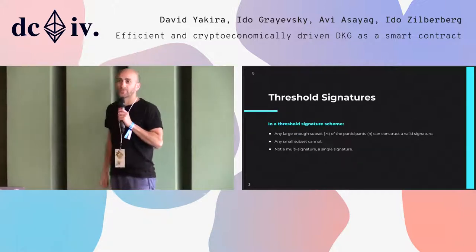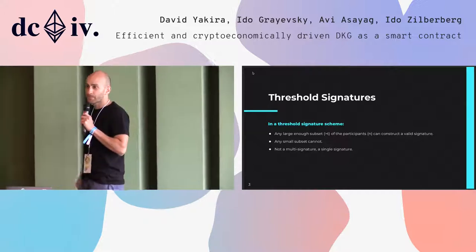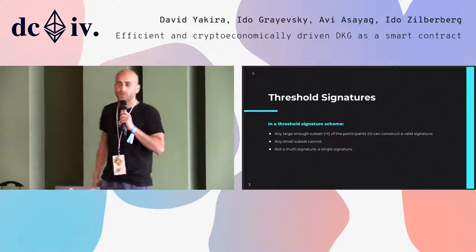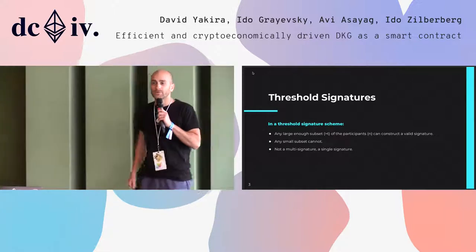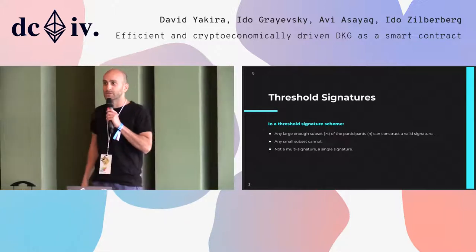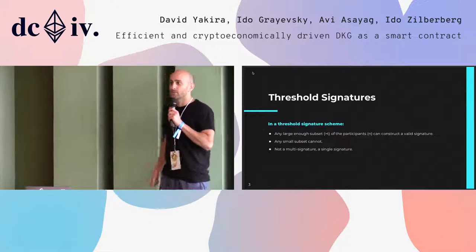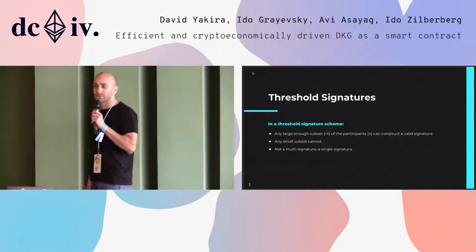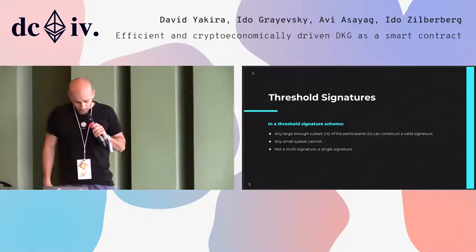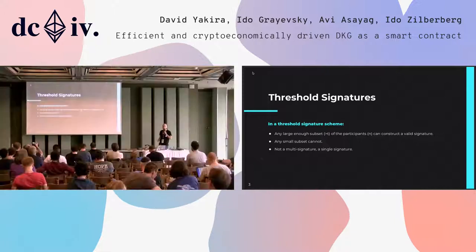A core cryptographic primitive that we use in Orbs is threshold signatures. In a threshold signature scheme, you have N participants, and any large enough subset should be able to produce a valid signature, but a small subset of the participants should not be able to. This is quite similar to a multi-signature, but not quite — because we have a single one signature.